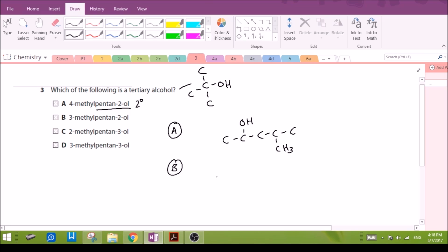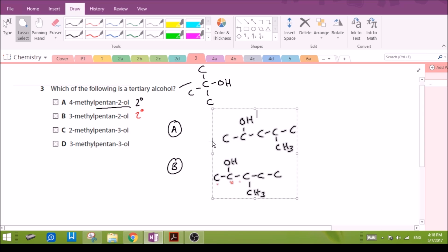B: 3-methylpentan-2-ol, same thing, hydroxyl on the second carbon, and the methyl group is on carbon number three. Again, this particular carbon is only joined to two other carbons, this is also a secondary alcohol. Let's look at C.